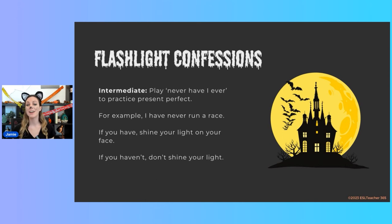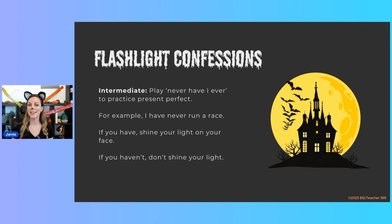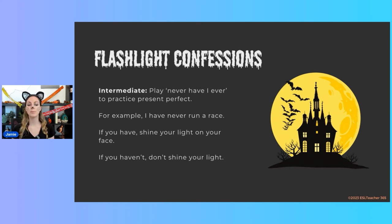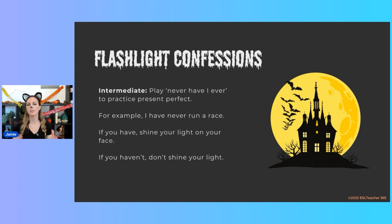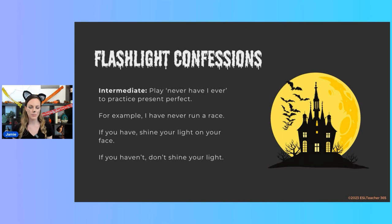For the intermediate version you can play Never Have I Ever, practicing present perfect. One student will say, for example, I have never run a race. If you have done that thing, you use your flashlight — if you haven't, you won't. You can also ask different follow-up questions to anyone who has illuminated their face: how far did you run? Which race did you do? Where did you run? Students can ask each other these questions too.